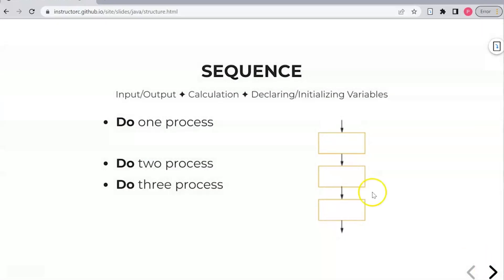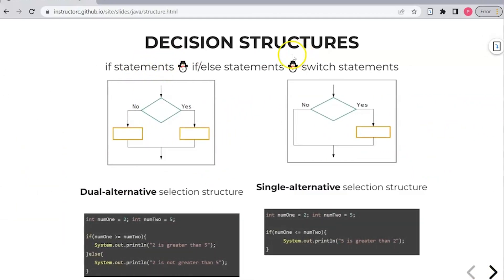So there's sequence. Again, input, output, calculation, declaring variables would also be considered sequence and initializing variables. You have decision structures, if statements, if-else statements. And these give you a visual of what that looks like. Especially if you're new to programming or new to learning how to code, working with a flowchart may be helpful to kind of see how the code functions and operates. But then down here I'll also provide you with code and what that would look like.